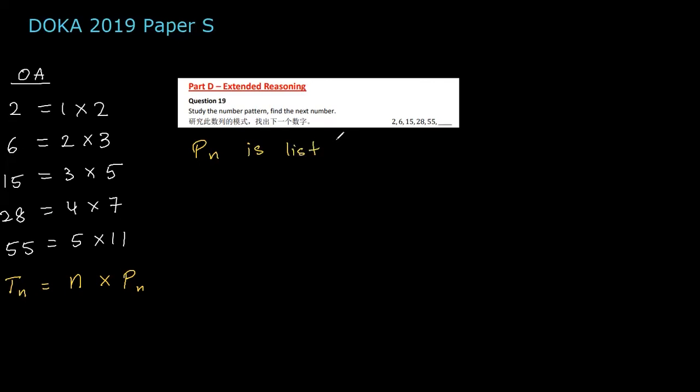So what is p_n? p_n here is the sequence or list of prime numbers. We can see that p_1 is 2, p_2 is 3, p_3 is 5, p_4 is 7, p_5 is 11.